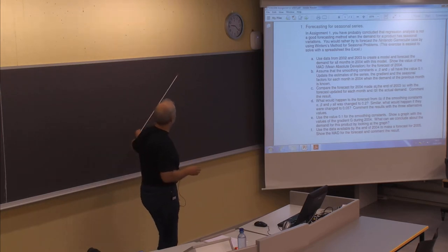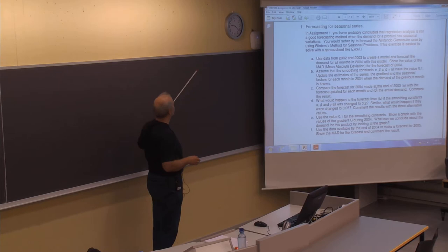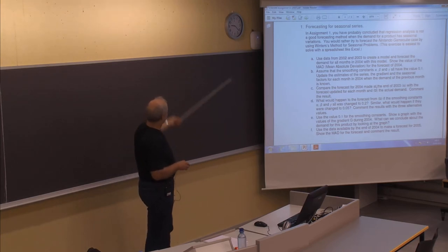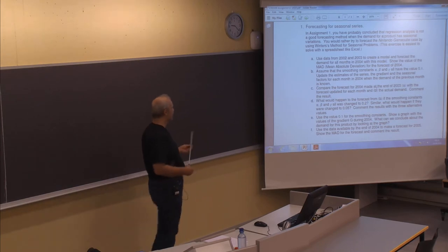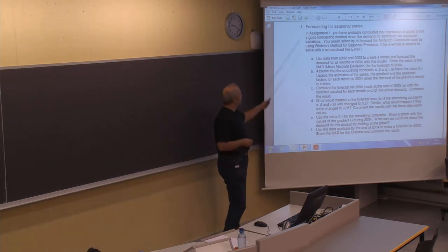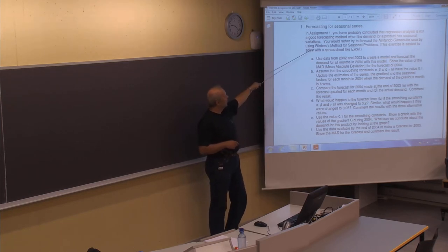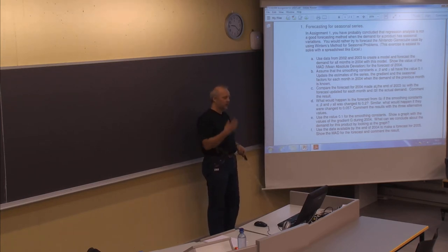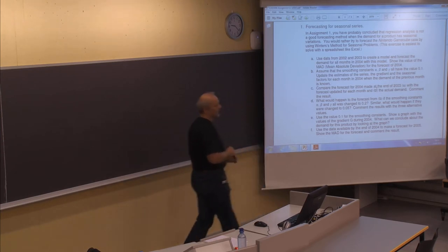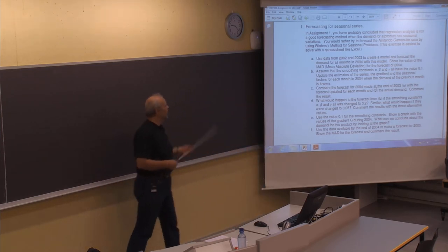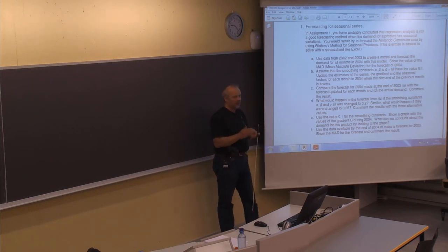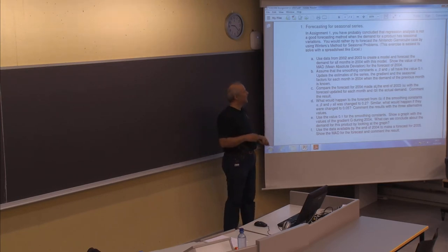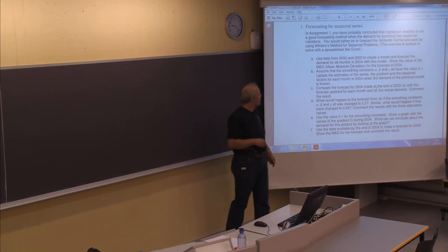A linear regression method, which only looks at the trend, will not give a very good forecast when you look into the future, because the line will continue to increase and you will have seasonal differences every year. So what you should do is use a method called Winters method, which I will present today. You have to use this method, which considers both an increasing or decreasing trend and also seasonal differences.